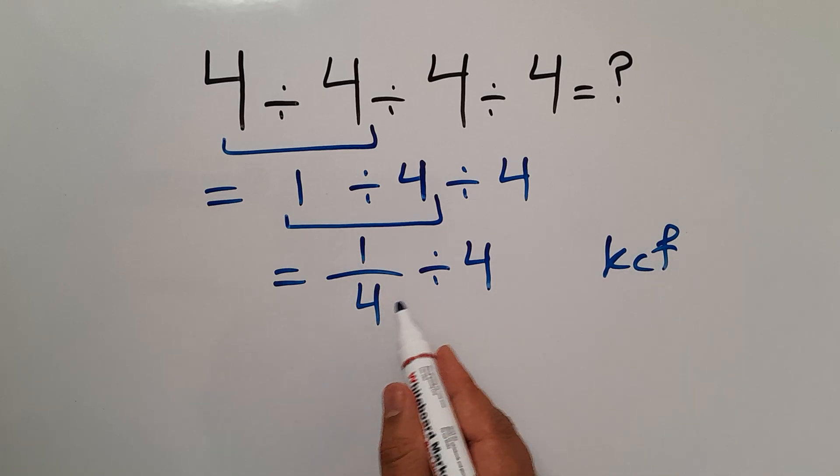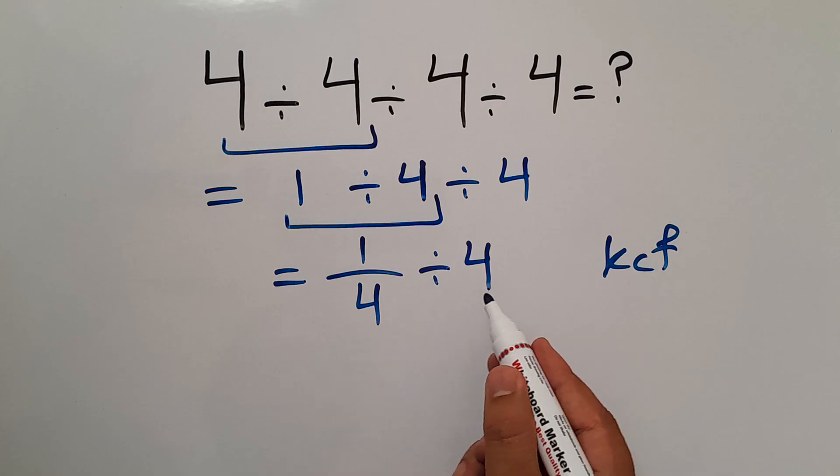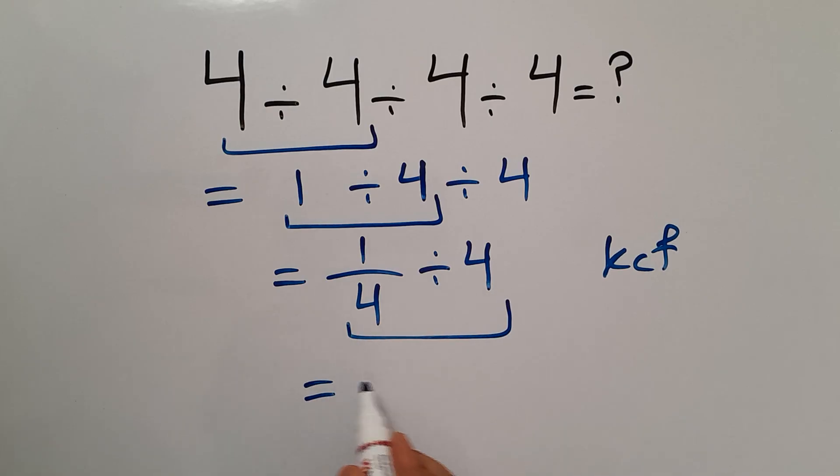Keep the first fraction, change division to multiplication, and flip the second fraction. So we can write 1 over 4, then times 1 over 4.